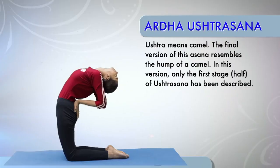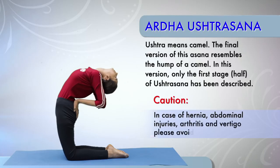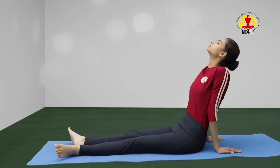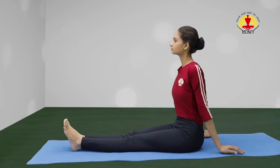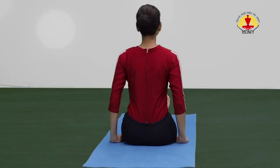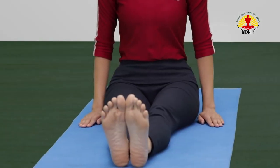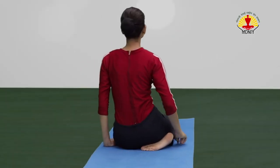Ardha Ushtrasana or Half Camel Posture. Caution! In case of hernia, abdominal injuries, arthritis and vertigo, please avoid doing this asana. Start with long sitting posture. Sit with the back straight, legs stretched out in front. Palm resting on the ground, fingers pointing forward. Fold the right leg at the knee and place the foot under the right buttock.